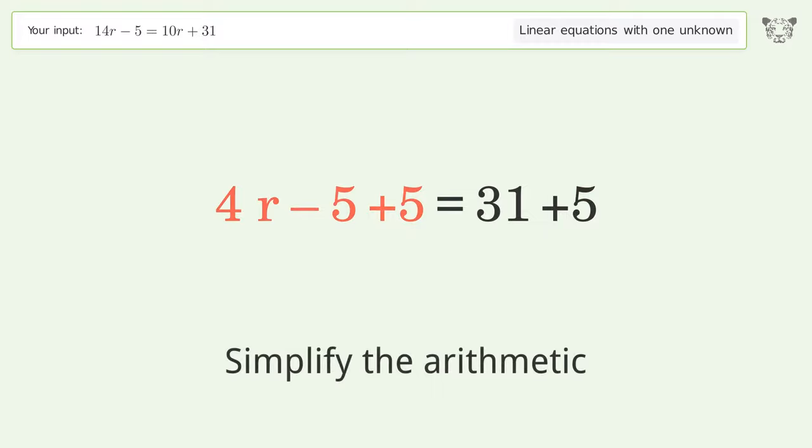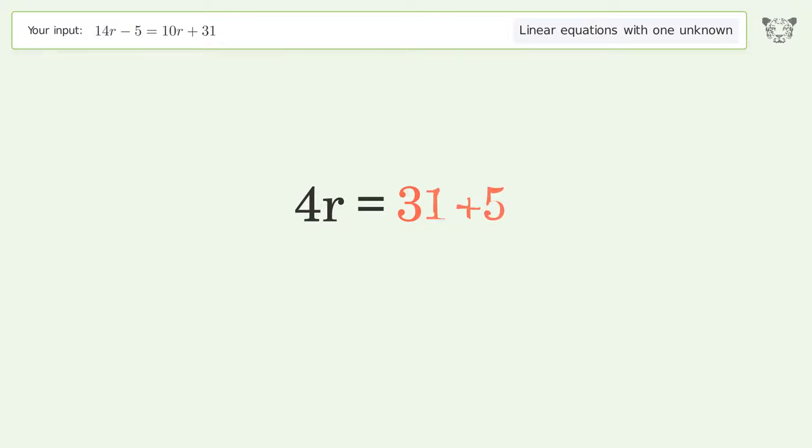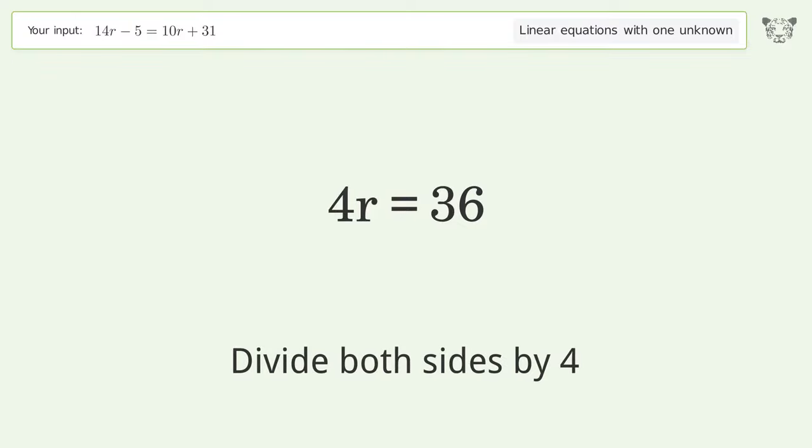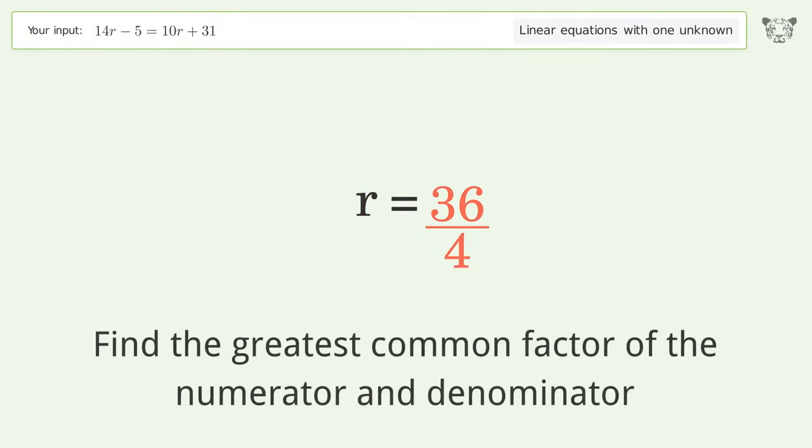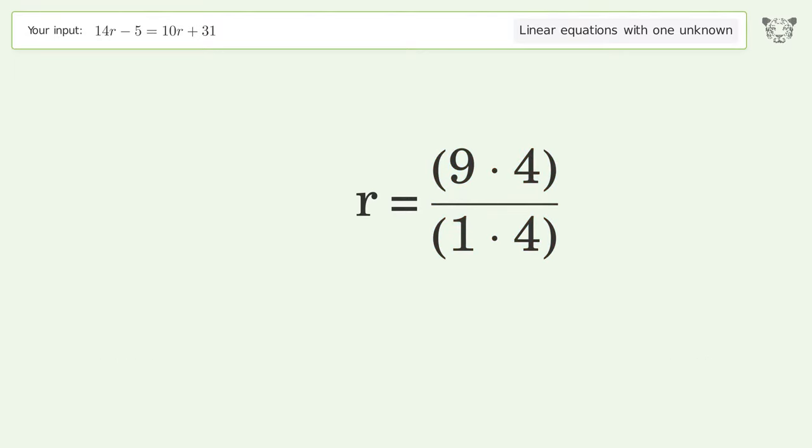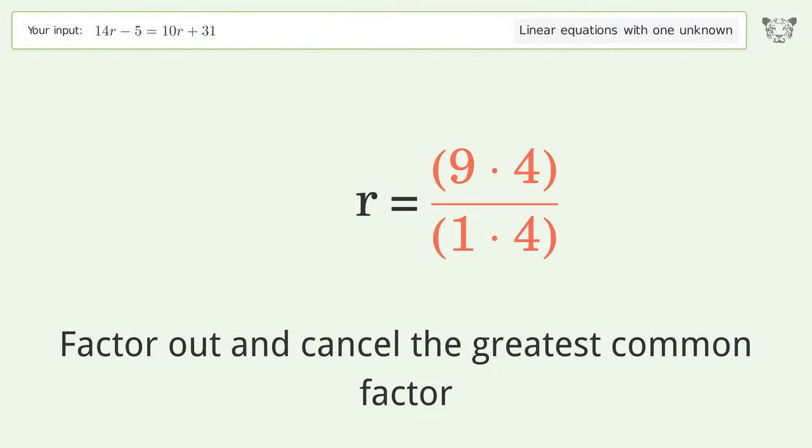Simplify the arithmetic. Isolate r by dividing both sides by 4 and simplify the fraction. Find the greatest common factor of the numerator and denominator, then factor out and cancel the greatest common factor.